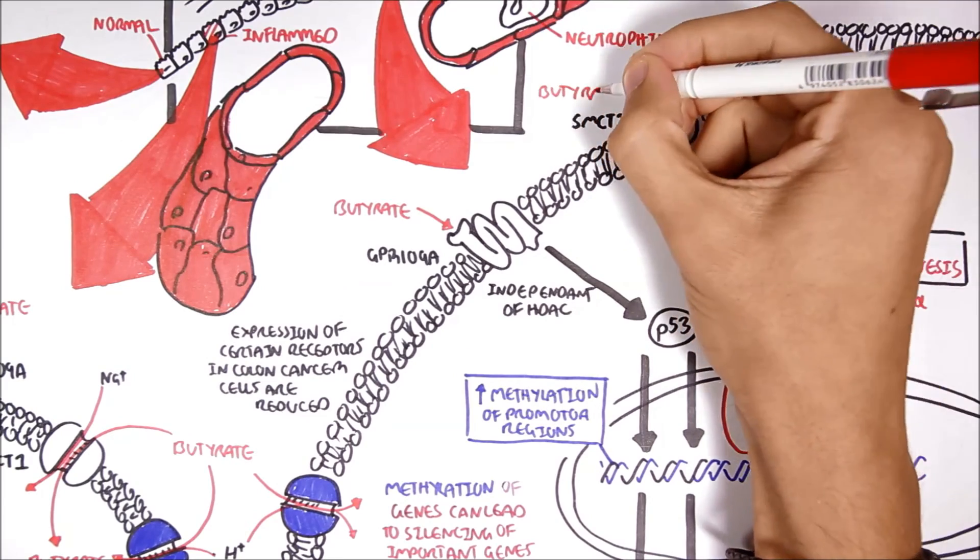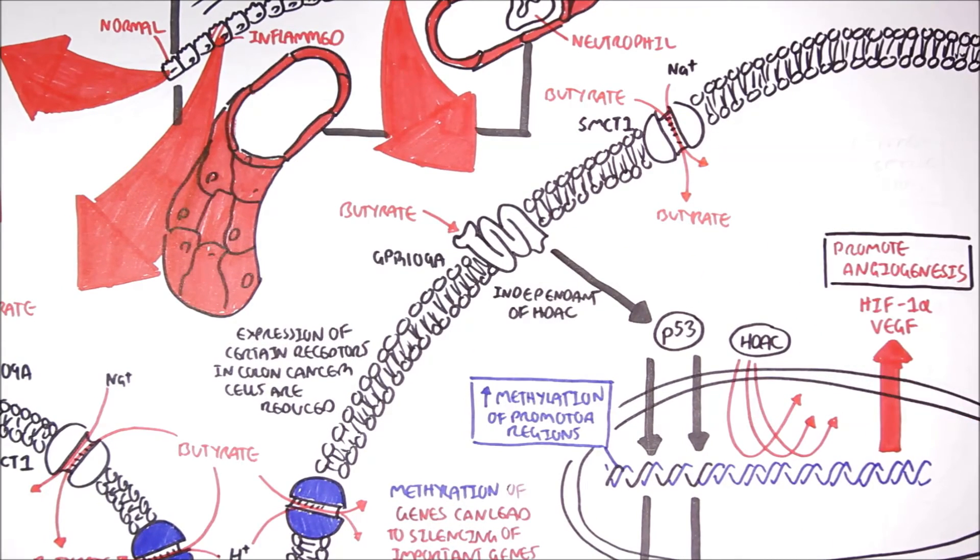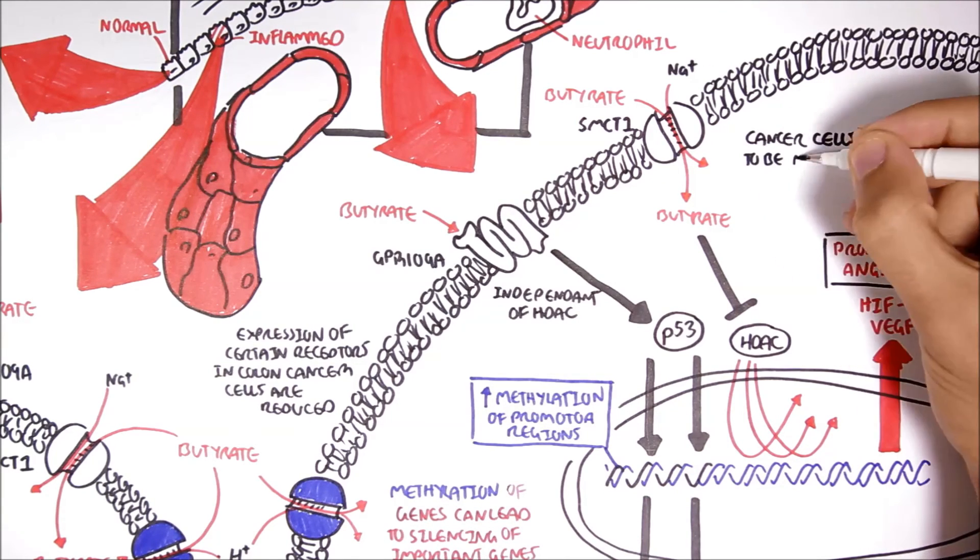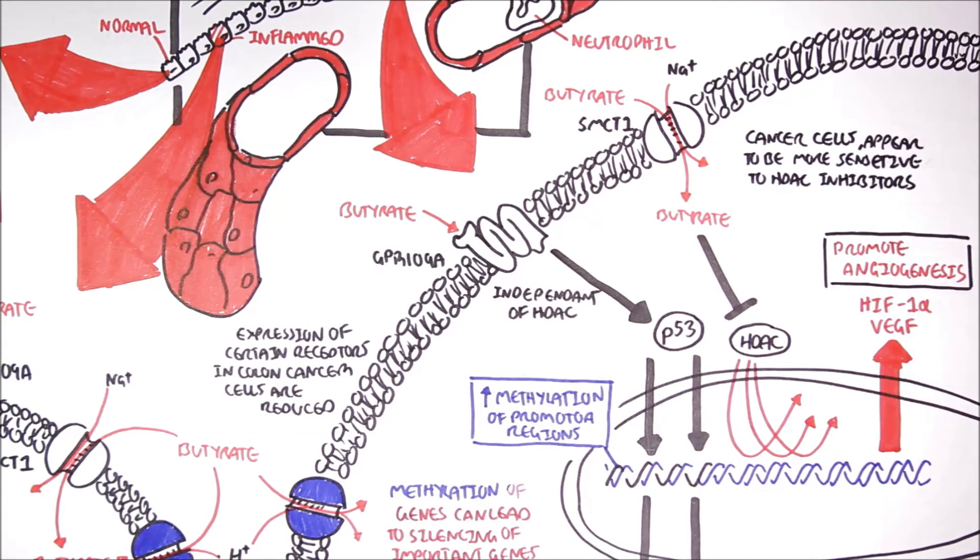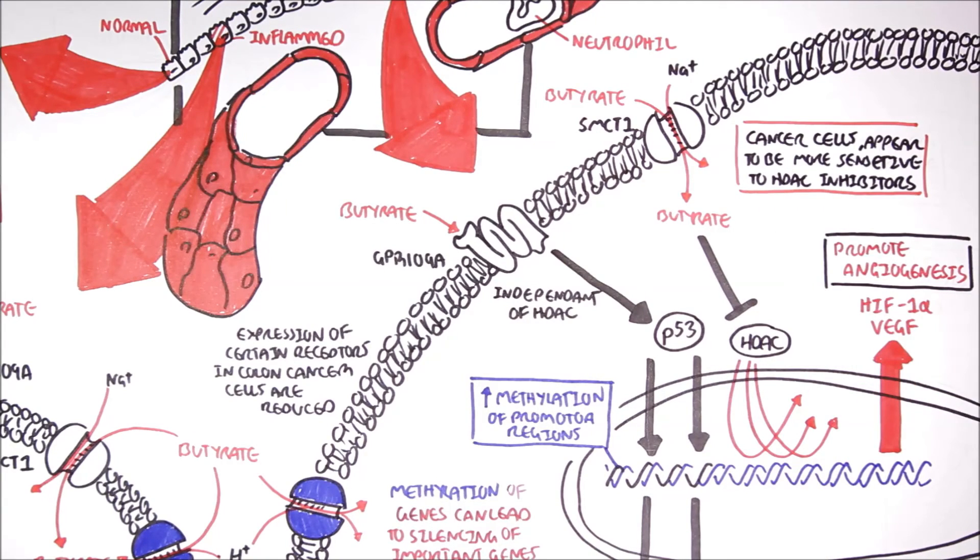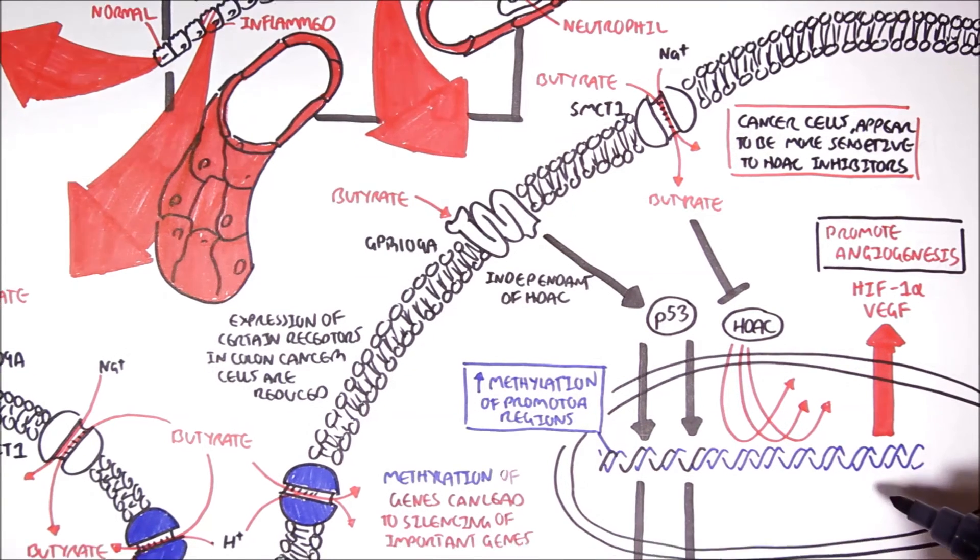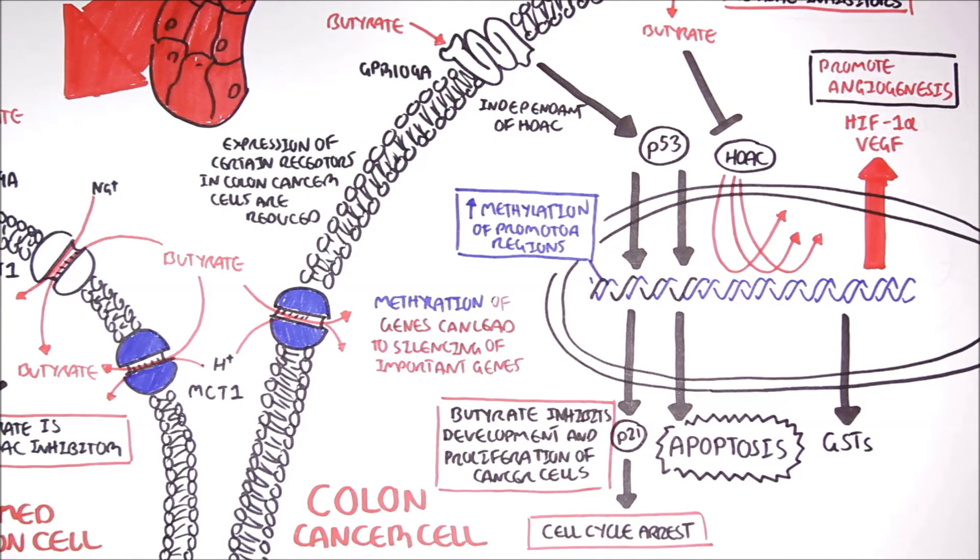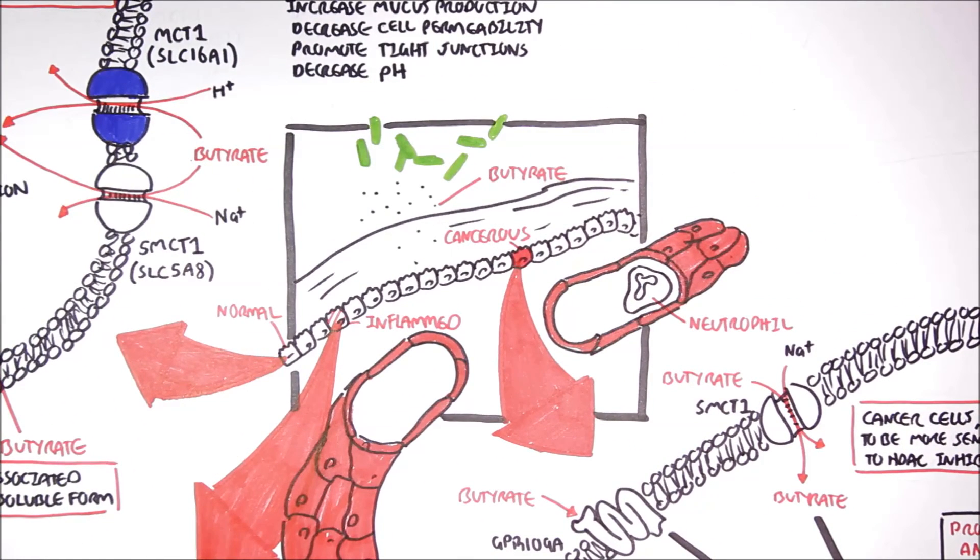Now, butyrate within the cell can inhibit histone deacetylase, allowing access of certain transcription factors. Interestingly, cancer cells appear to be a lot more sensitive to histone deacetylase inhibitors, such as butyrate. Inhibition of histone deacetylase can allow expression of genes that code for glutathione S-transferases, for example, which will reduce oxidative damage.